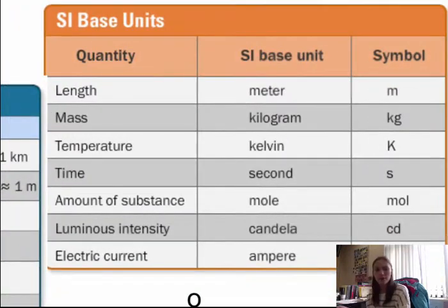There are seven SI units: length, mass, temperature, time, an amount of a substance, how luminous it is, and the current or electricity. You have meters which is M, kilograms is mass, Kelvin is temperature, seconds is S, moles are M-O-L or M-O-L-E, candelas are C-D, and amperes are A or amps. Those are the seven SI base units.